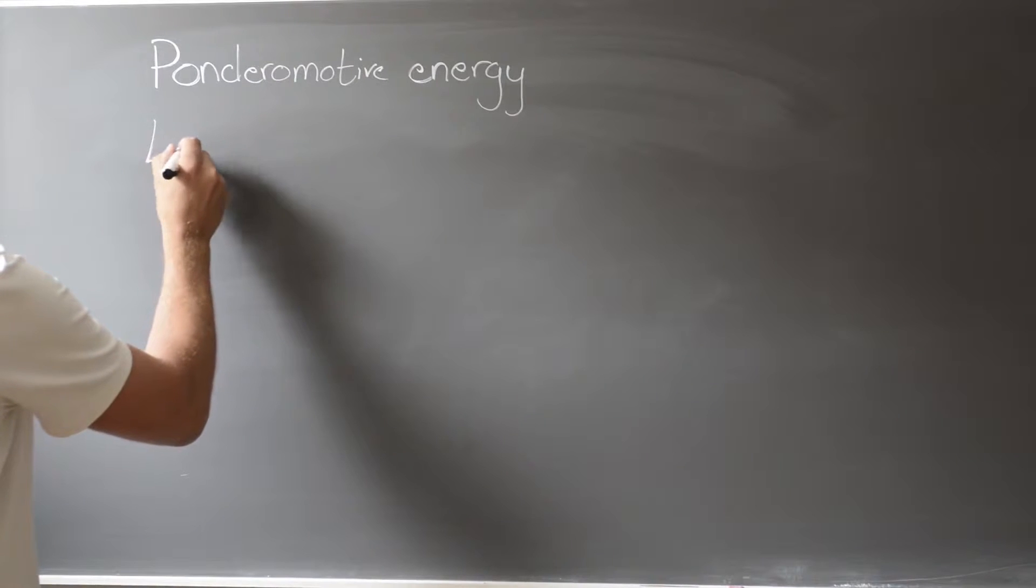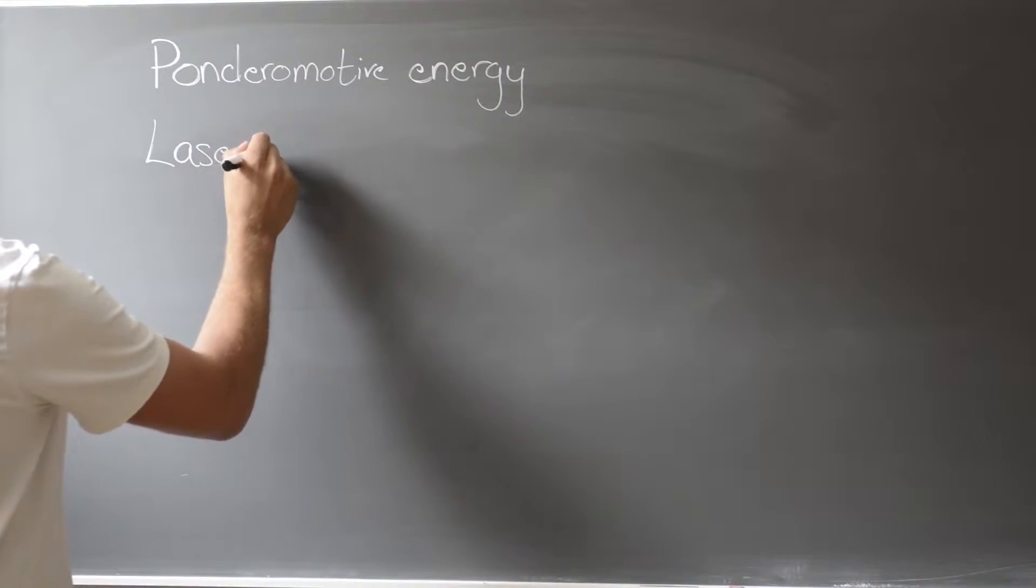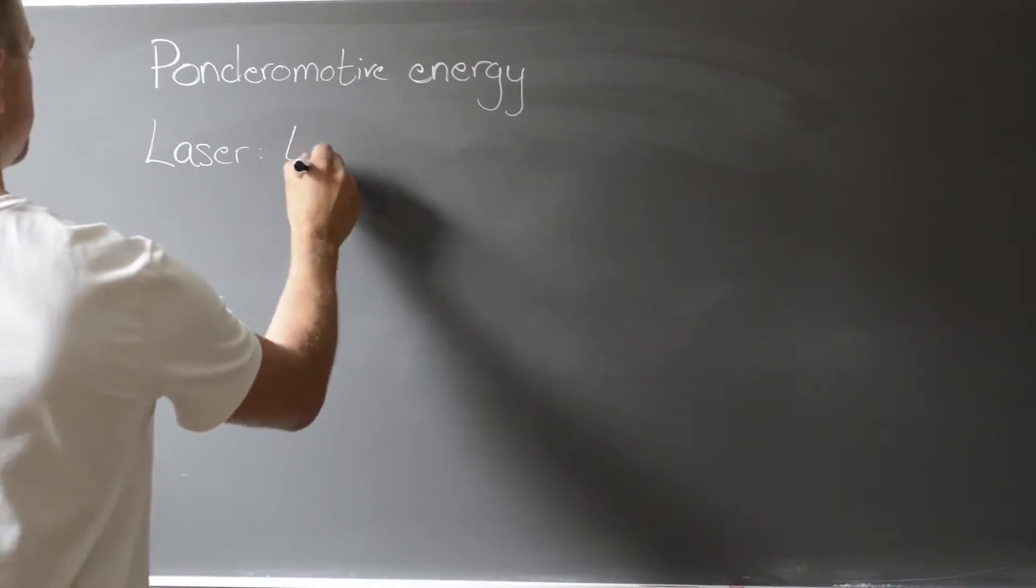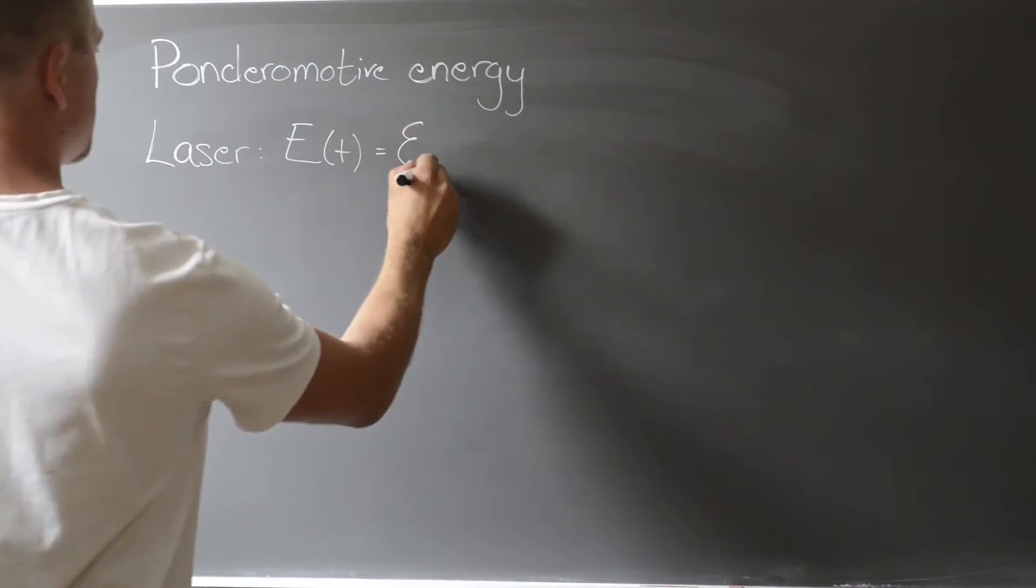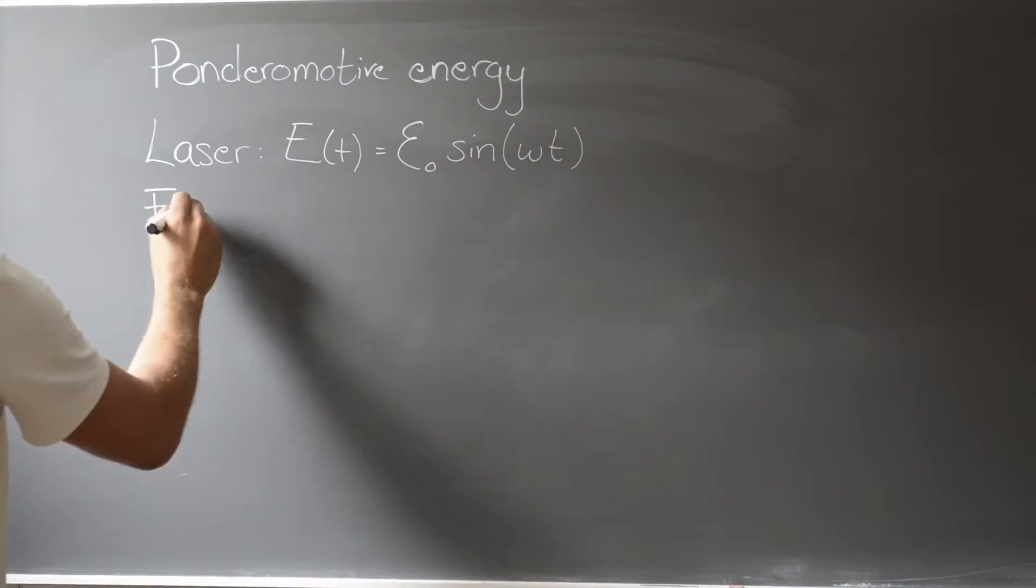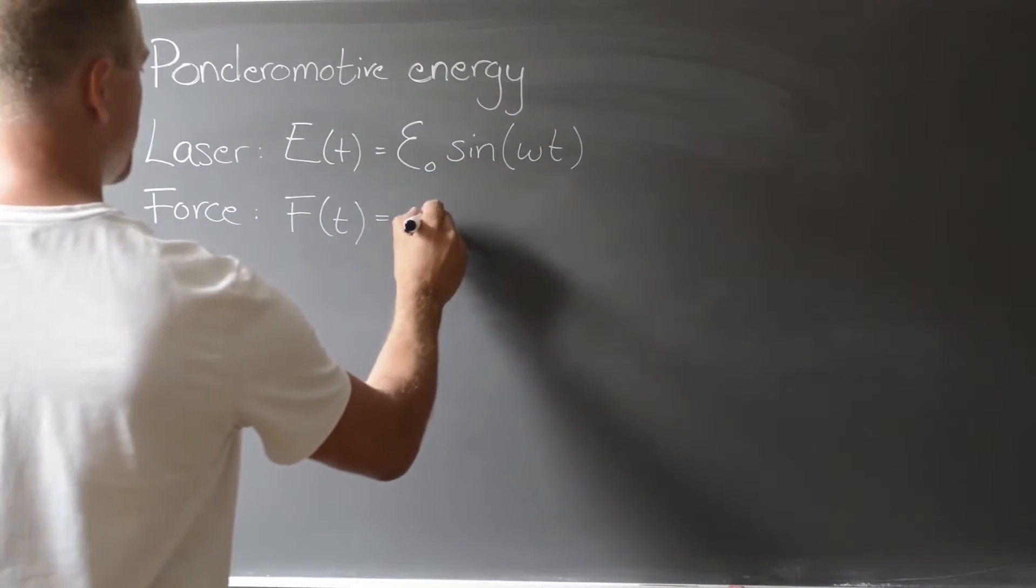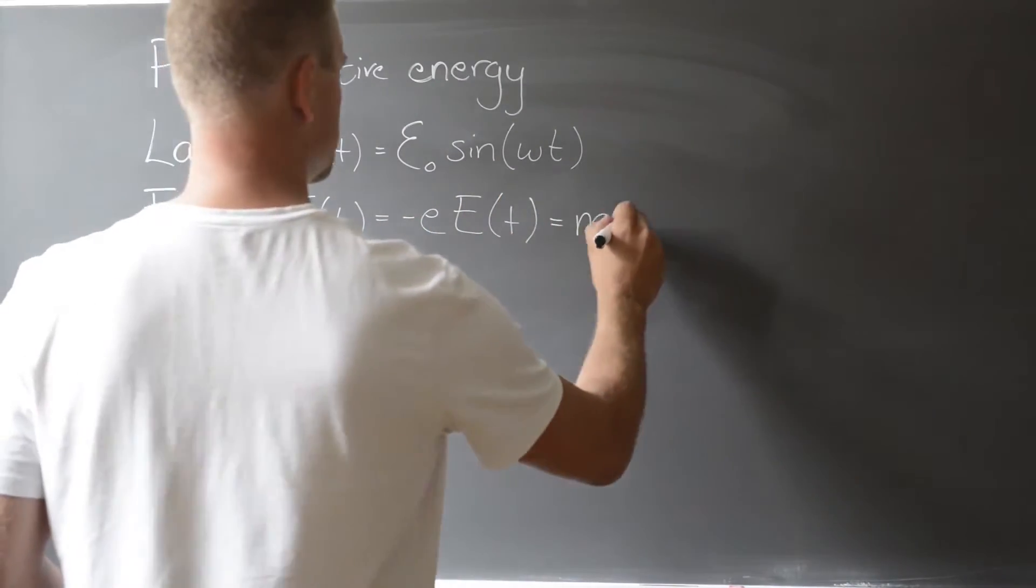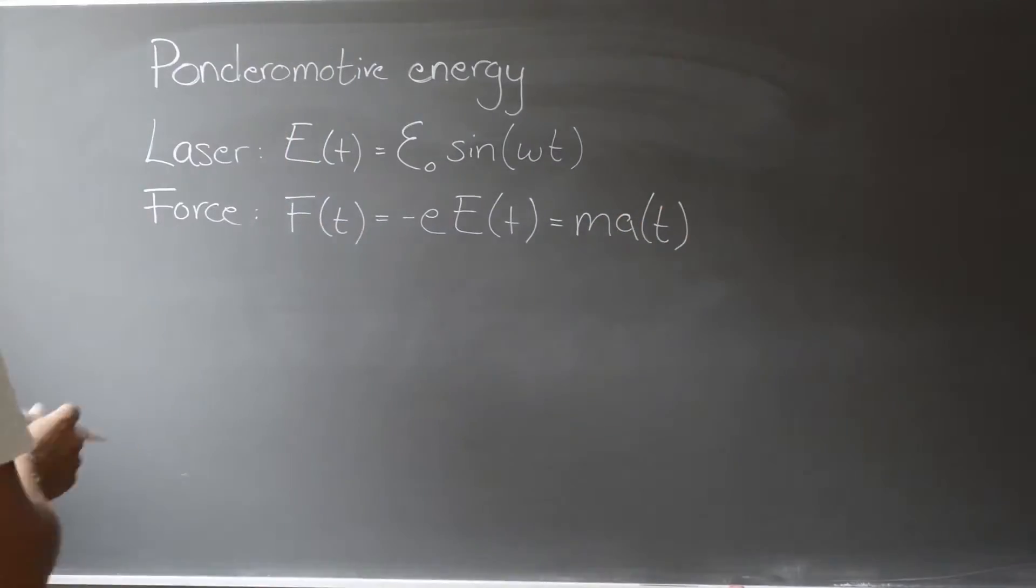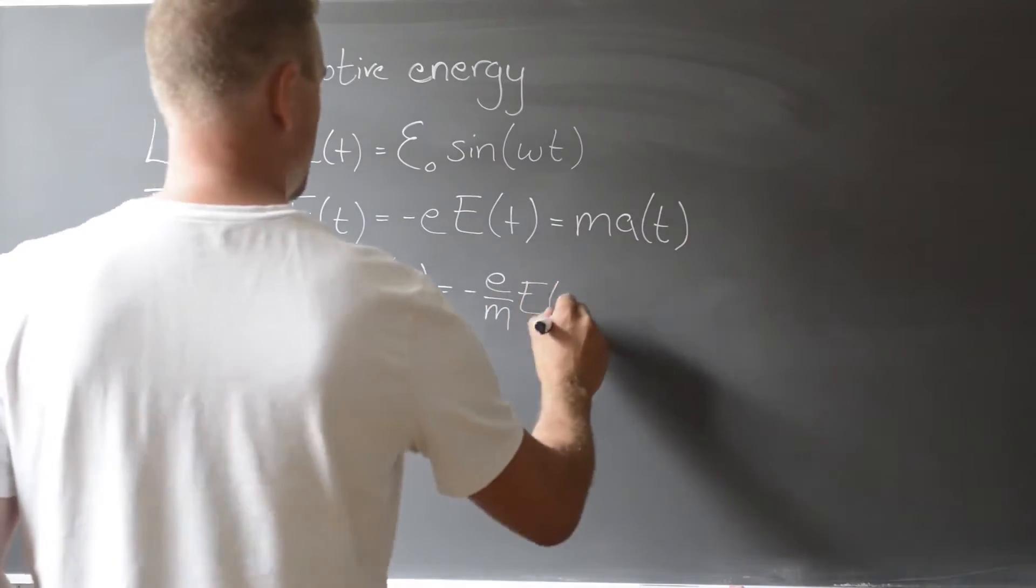This wiggle energy is usually referred to as the ponderomotive energy. We write the electric field of the laser as an amplitude and a sine function, and we start with the force exerted on the electron, which of course is the charge times the field strength, and then in turn, this equals the mass times the acceleration. From this expression, the acceleration is calculated in the following way.